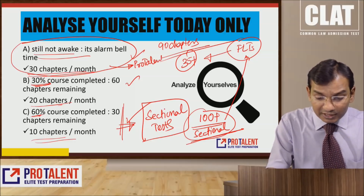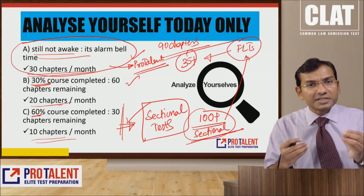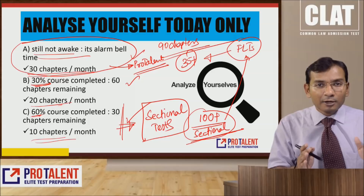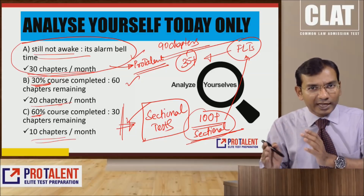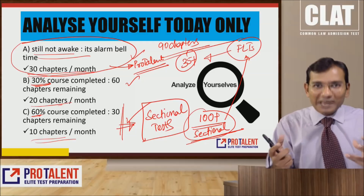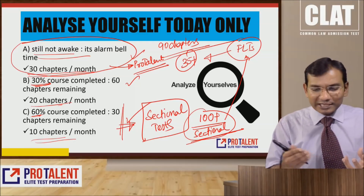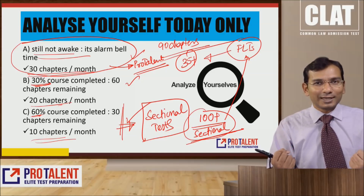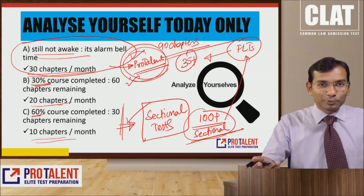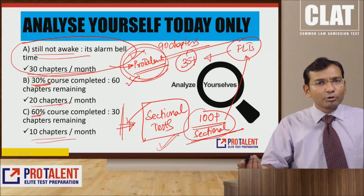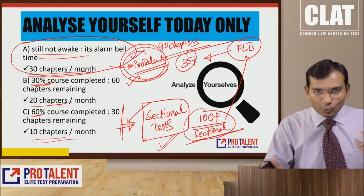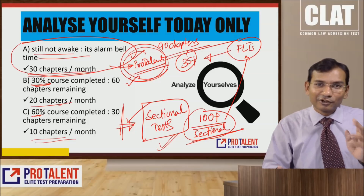Sectional tests will help you improve a lot. If you perform well in small sectional tests, that same performance will help you in full-length tests. You must also appear for a lot of full-length tests — Pro Talent offers 35-plus full-length tests. If you have not yet started, pick up a good study material. Pro Talent study material covers topics in detail and is delivered in two phases with repeated theory and different question sets.